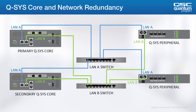We simply add a secondary switch for the LAN B network. Remember, the previous rules still apply: LAN A connections and LAN B connections should be configured as different subnets and connected to physically separate switched networks that do not interconnect.